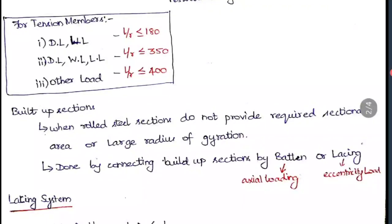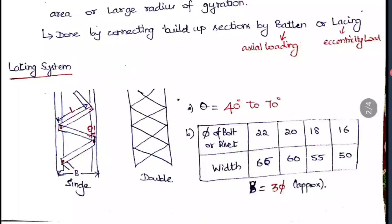In the lacing system, two vertical members are connected with lacing plates. When only one lacing is used it is called single lacing; when two are used it is called double lacing. The length of lacing is noted as l, the angle between the lacing and the vertical member is theta, and b is the width. The theta value should be between 40 and 70 degrees.